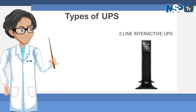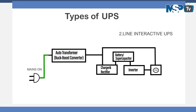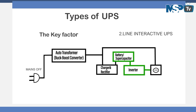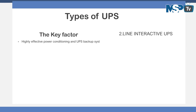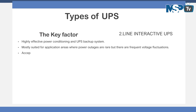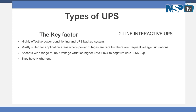The line interactive UPS has a similar design to the offline or standby UPS, but with properties of an online double conversion, which we will cover later. Key factors: these are highly effective for power conditioning and UPS backup. They are mostly suited for applications where power outages are rare but there are frequent voltage fluctuations. They accept a wide range of input voltage variation — up to positive 15% and negative up to minus 25%.